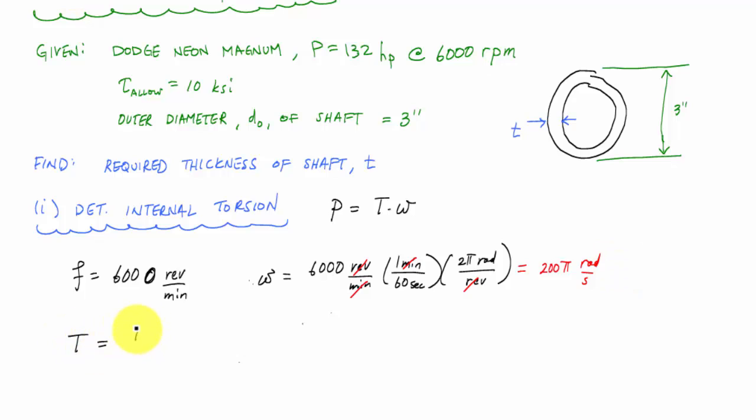And that is my angular velocity. And if I want to calculate my torque, my internal torsion, this is just going to be power divided by omega. And the power that I have is 132 horsepower divided by 200 pi radians per second.